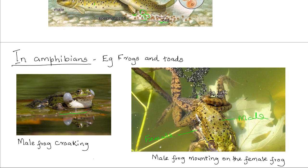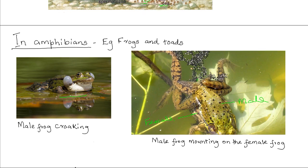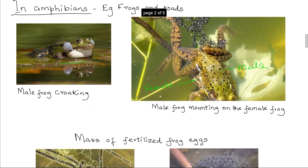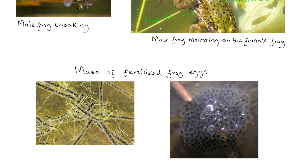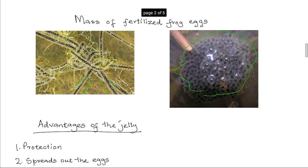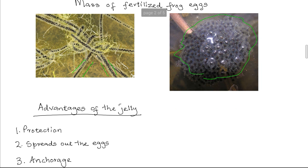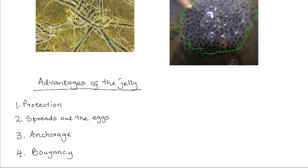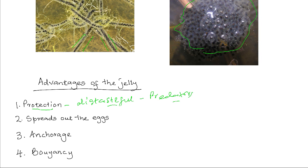In frogs and toads, the eggs are surrounded by a jelly substance that makes the eggs look clustered together. They can occur in the form of ribbons or strings of fertilized eggs, or a mass of eggs held together. The jelly plays the following roles. First, the jelly provides protection against predators as it is slippery and has a distasteful smell — it is distasteful to predators, and in this way the eggs are protected from consumption.